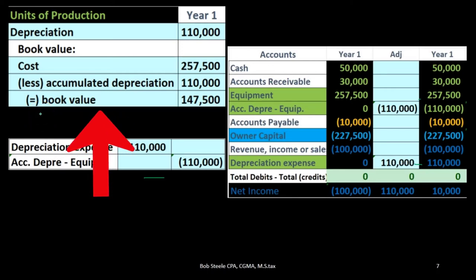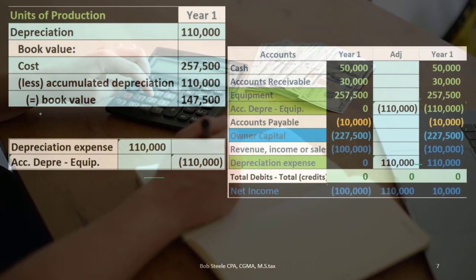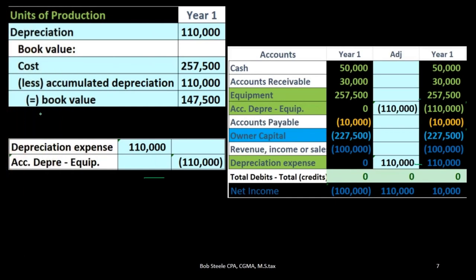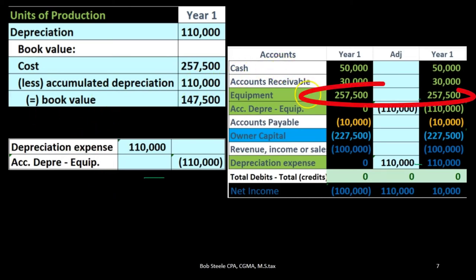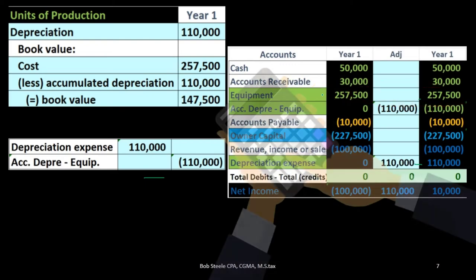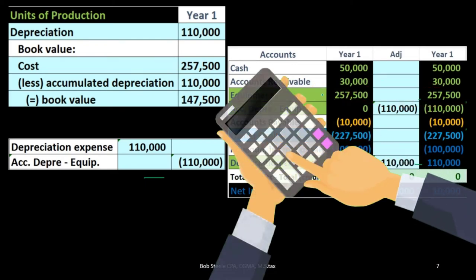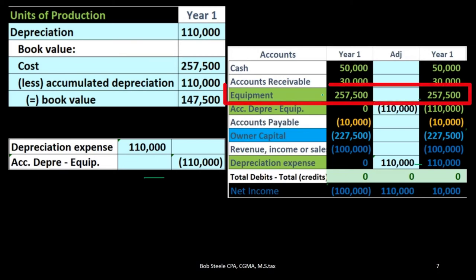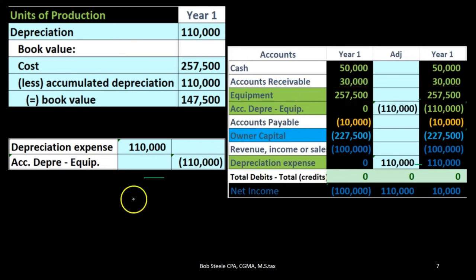We would continue this process until we get down to the salvage value. Once we hit the salvage value — or, if there were no salvage value, once we reach zero — we stop depreciation, because we don't want to go below the salvage value or have a negative book value. This depreciation method is just an estimate, and we stop at that point in a similar way that we would stop other depreciation methods, such as the double declining balance.